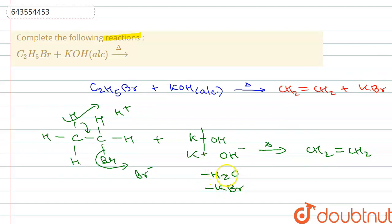So here as you can see, one molecule of water and one molecule of KBr is being removed, and from the whole main structure one hydrogen and one bromine is being removed. That's why it is called dehydrohalogenation reaction.